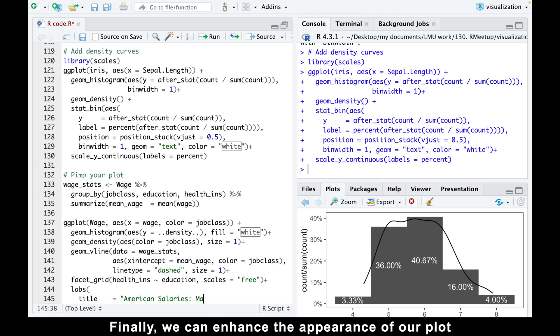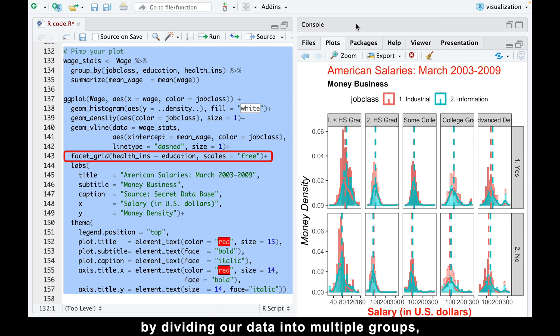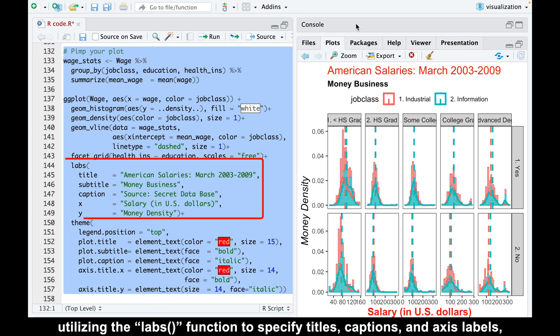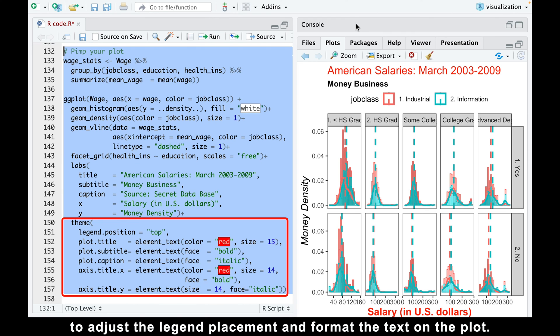Finally, we can enhance the appearance of our plot by dividing our data into multiple groups, utilizing the labs function to specify titles, captions, and axis labels, and employing the theme function to adjust the legend placement and format the text on the plot.